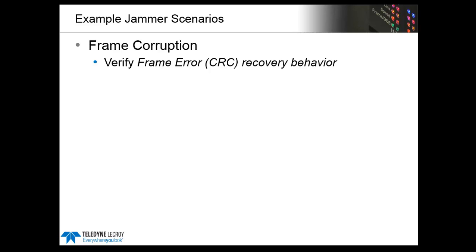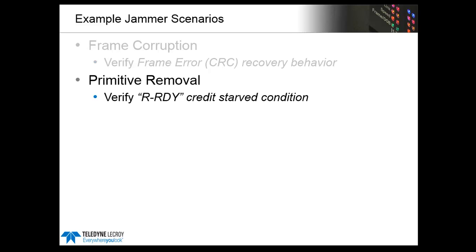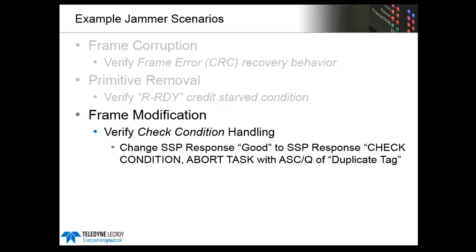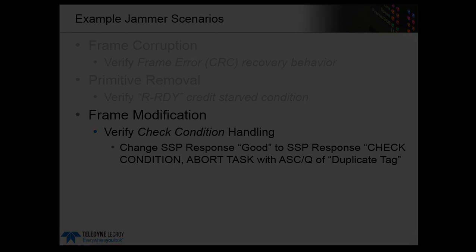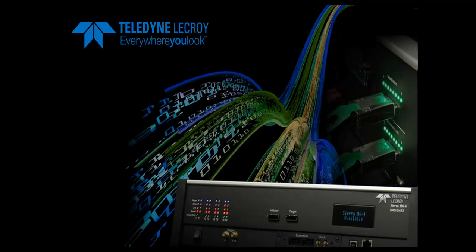To see the infusion jammer in action, please download the next training segment, where we'll start with a simple CRC error example, and then cover some of the other cases including credit starvation for target ports and check condition handling for host controllers. Along the way, we'll see how the analyzer is an essential part of this testing, because it lets you see and confirm the recovery behaviors, including any latencies that are introduced.